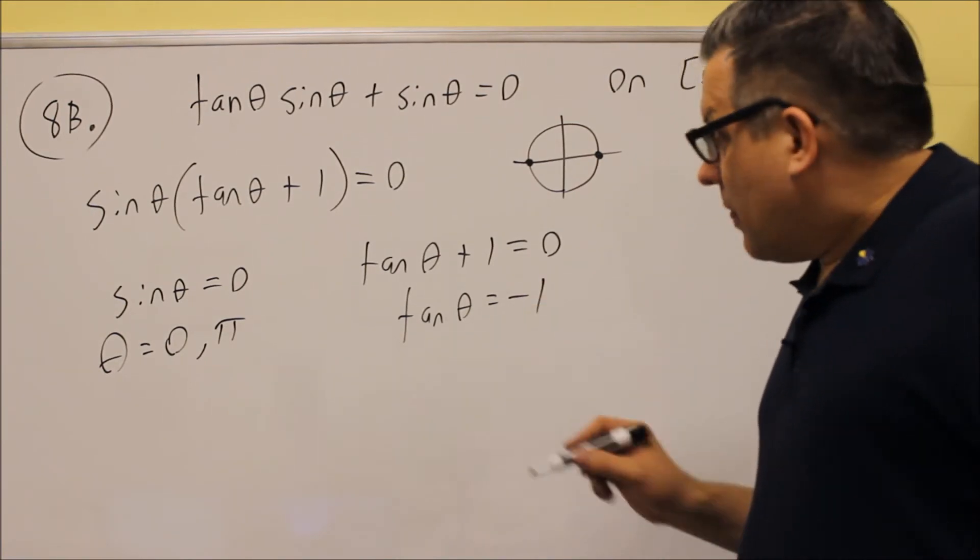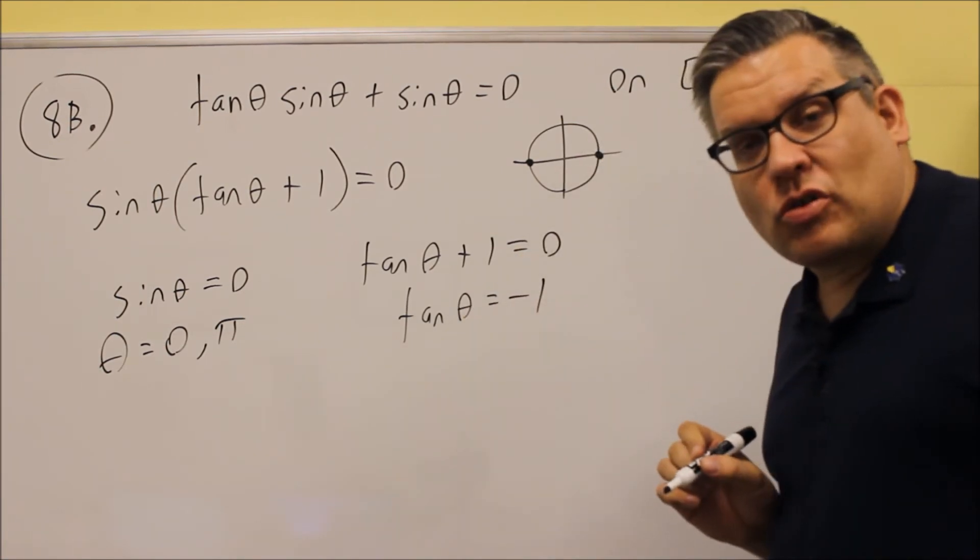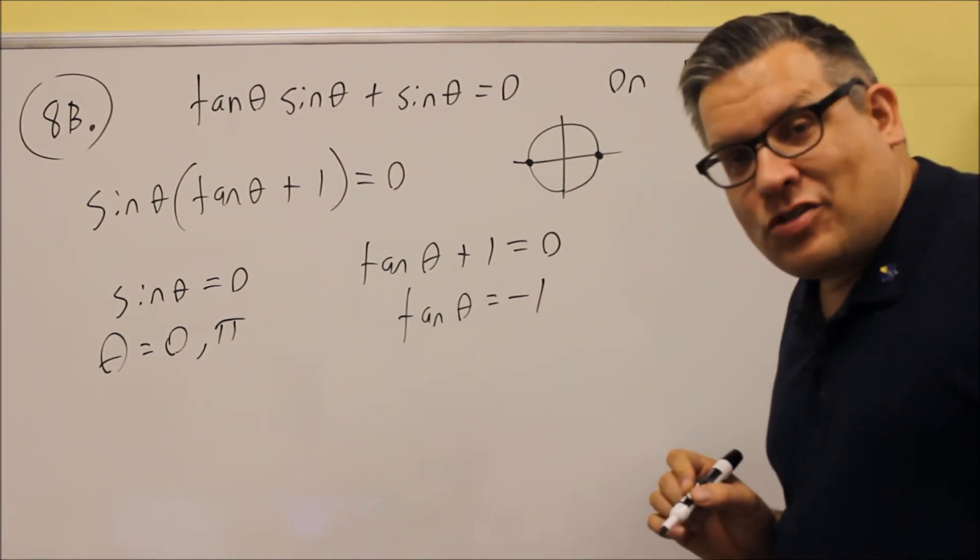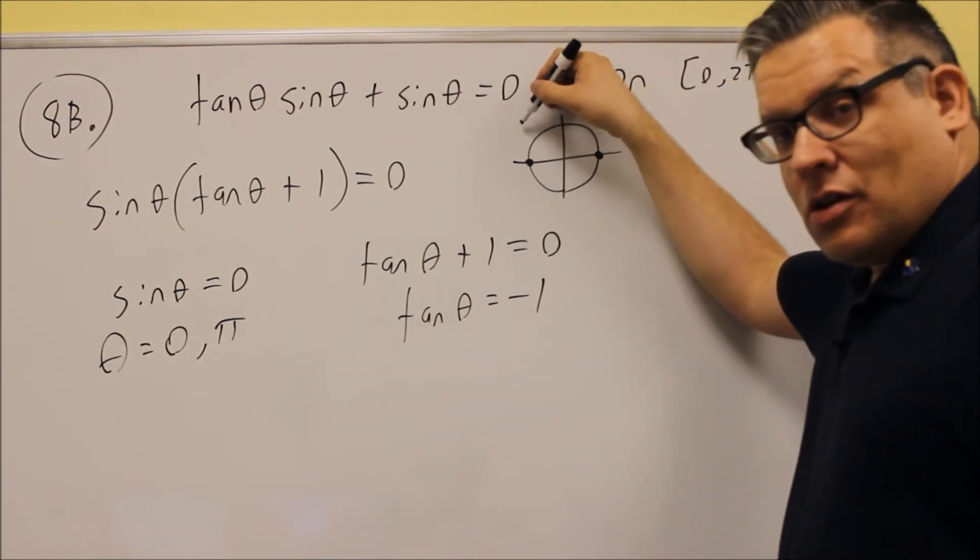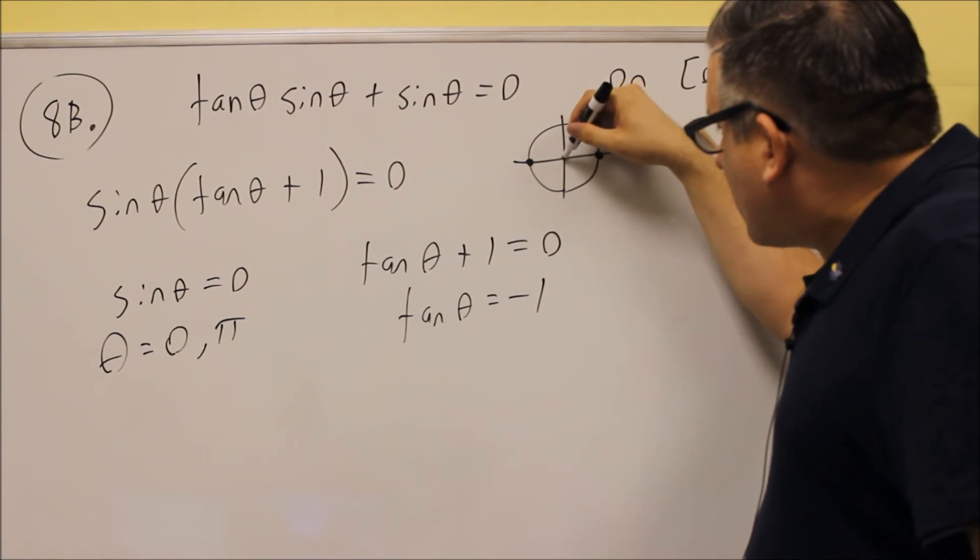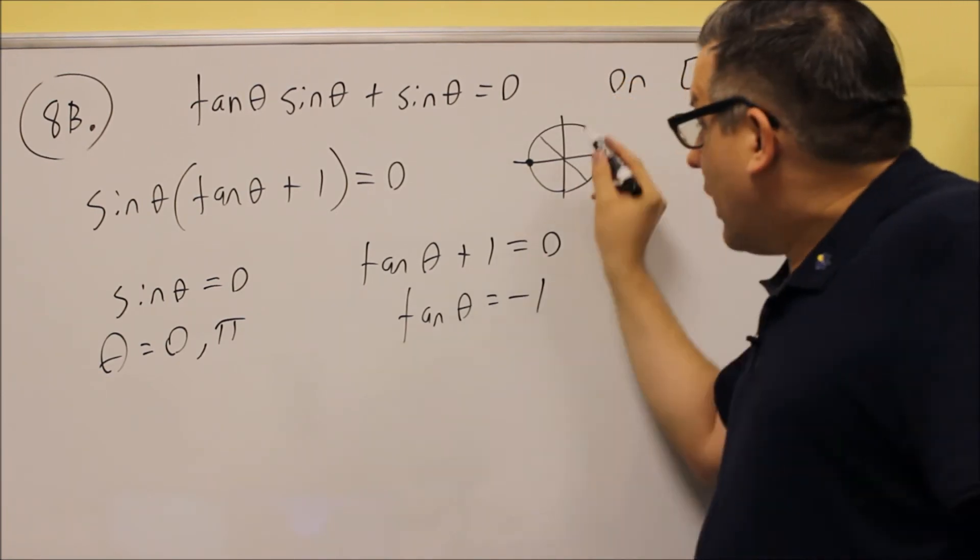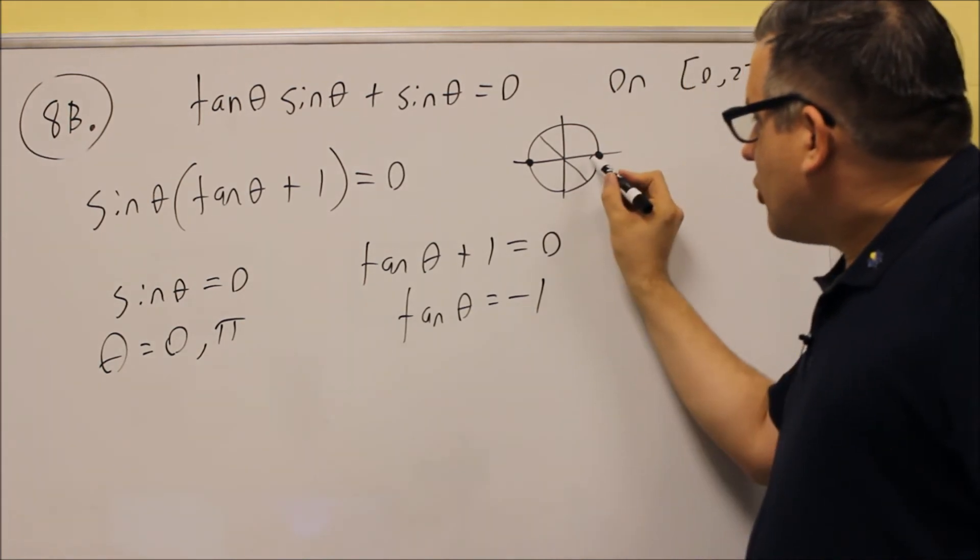Now, that's going to occur when the y value divided by the x value on the unit circle is equal to negative 1. Now, tangent is negative in the second and fourth quadrants, and that's going to occur at the 45 degree, or halfway point, reference angle for each of those.